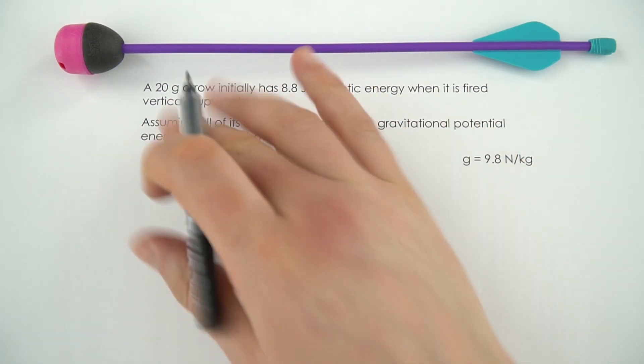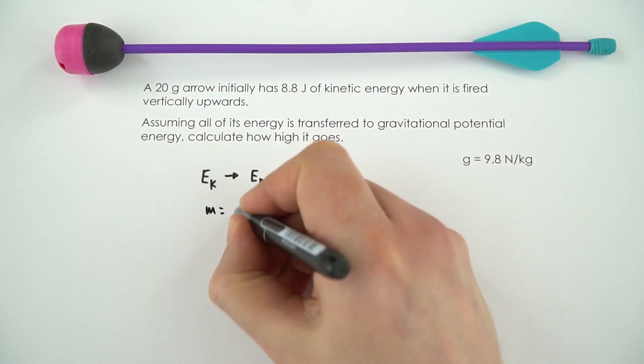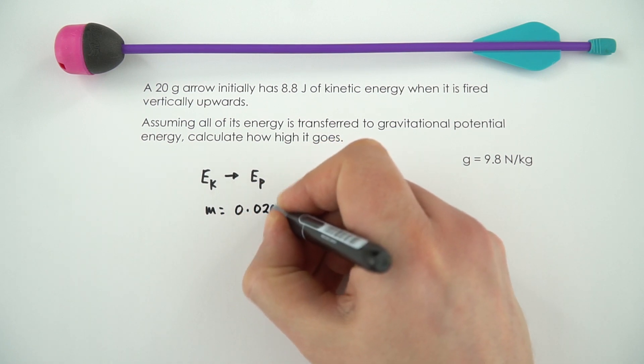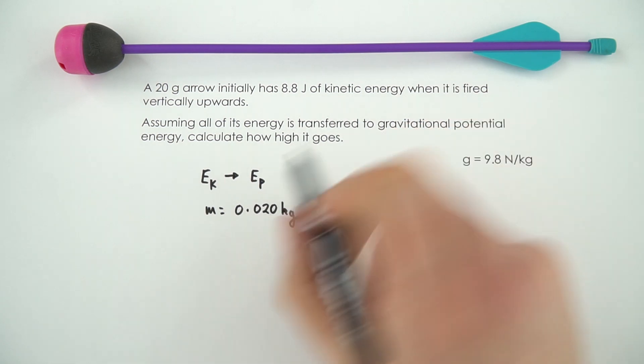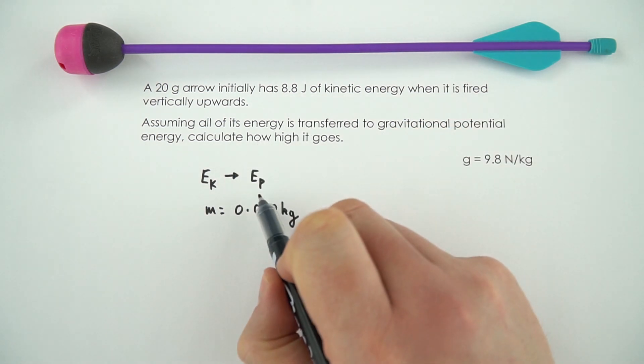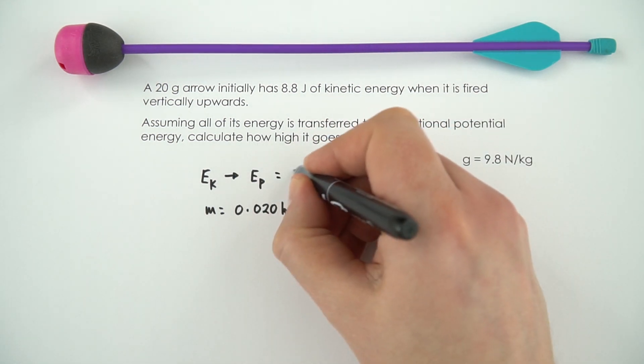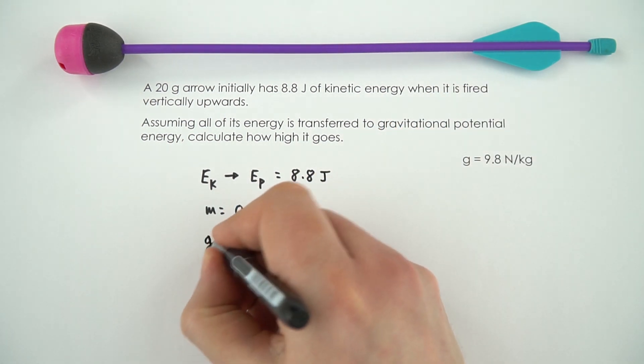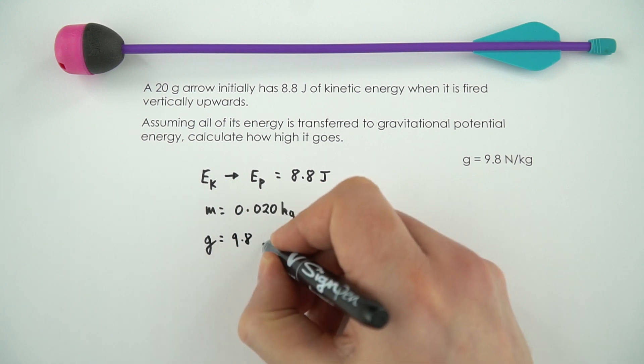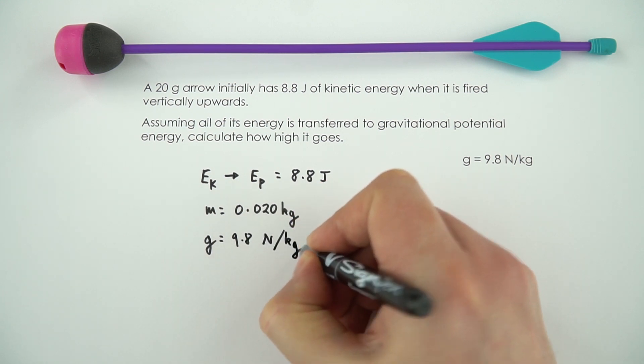What do we know from the question? The mass of the arrow is 0.020 kilograms. The kinetic energy it had, which is going to be equal to the potential energy at the end, is 8.8 joules. And we've been given that the gravitational field strength is 9.8 newtons per kilogram.